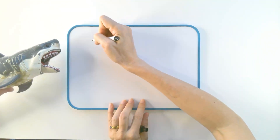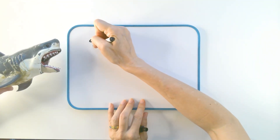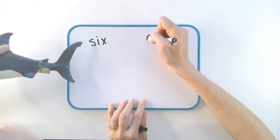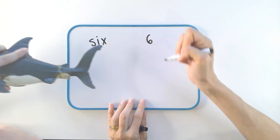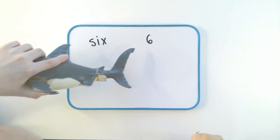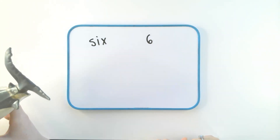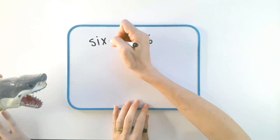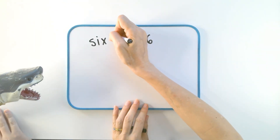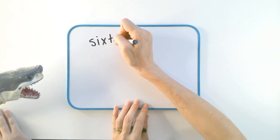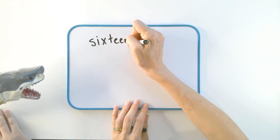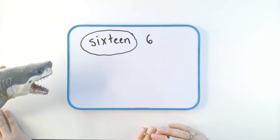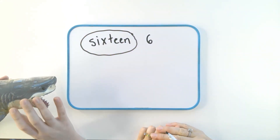We are going to be talking about the difference between English and maths when it comes to numbers. In English, we write a word. Sixteen. This thing is a word.